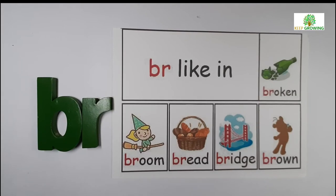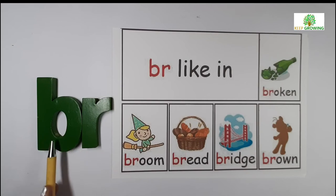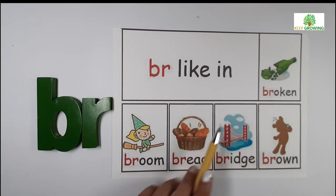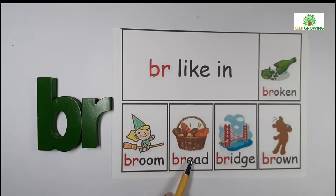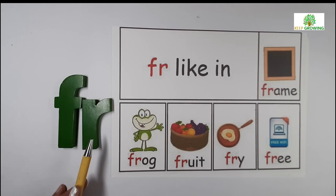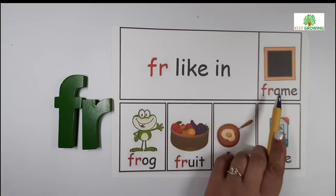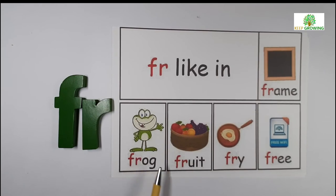Next blend is the blend of letter B and R. B sounds B and R sounds R — BR. For example: broken, broom, bread, bridge, brown. F gives the sound F and R gives the sound R. FR — the blend of FR gives the sound FR. For example: frame, frog, fruit, fry, free.